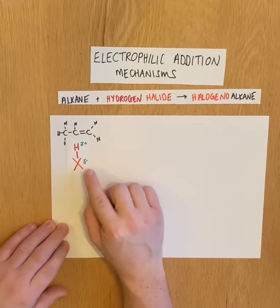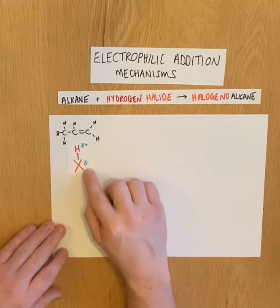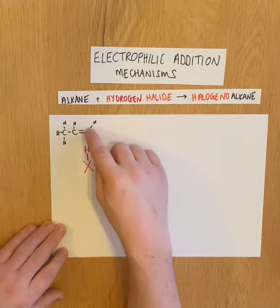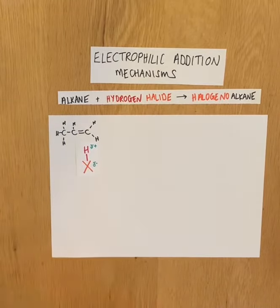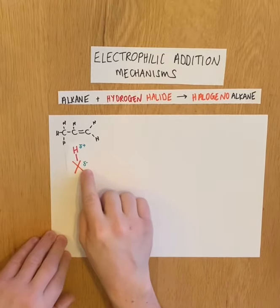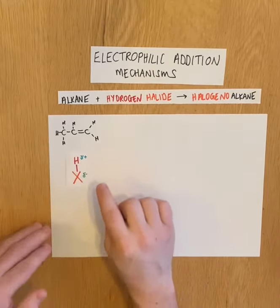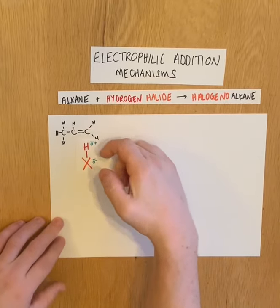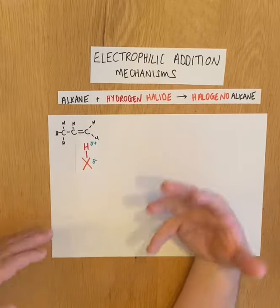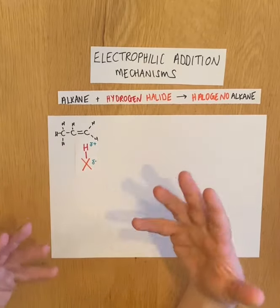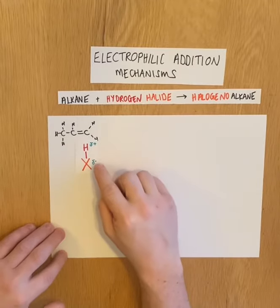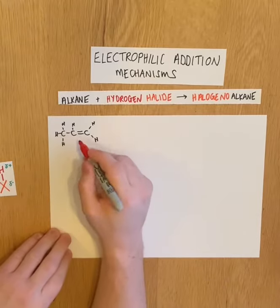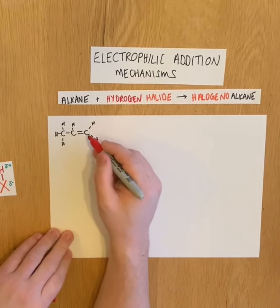So in the majority of collisions between propene and a hydrogen halide, the hydrogen is going to form a bond to the end carbon. According to Markovnikov's rule, the hydrogen goes to the carbon that already has the most hydrogens. So the hydrogen is more likely to bond to the end carbon to give the major product.